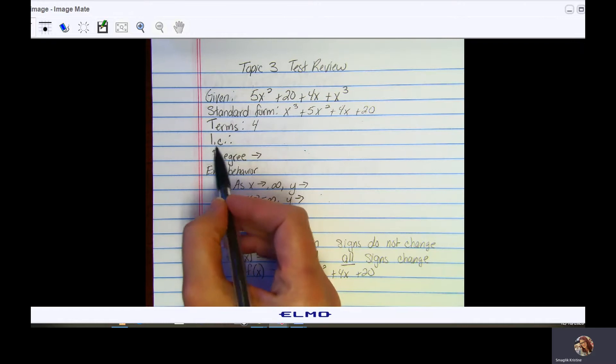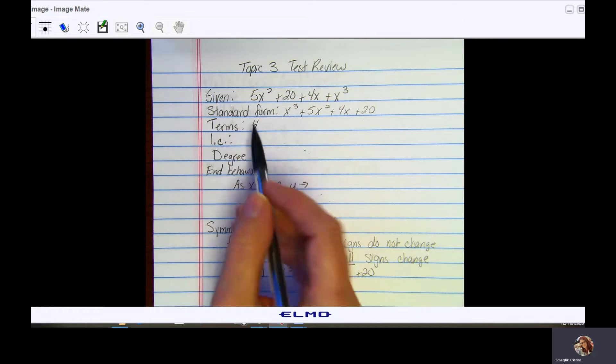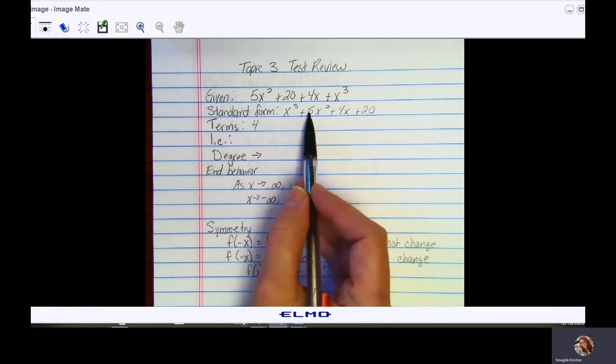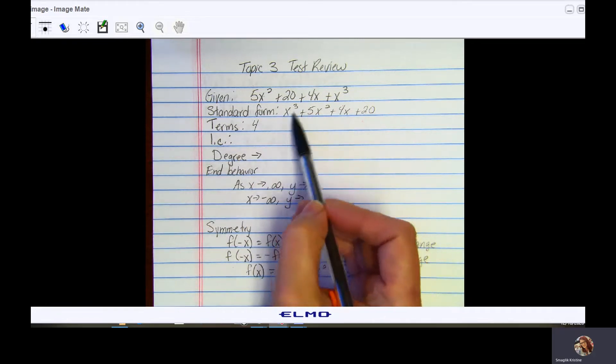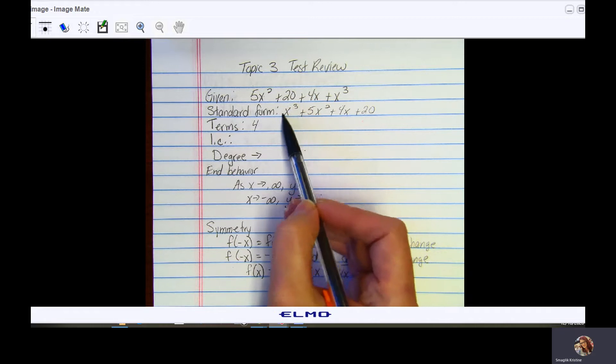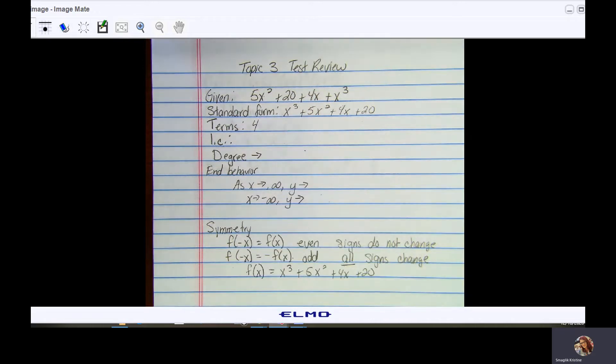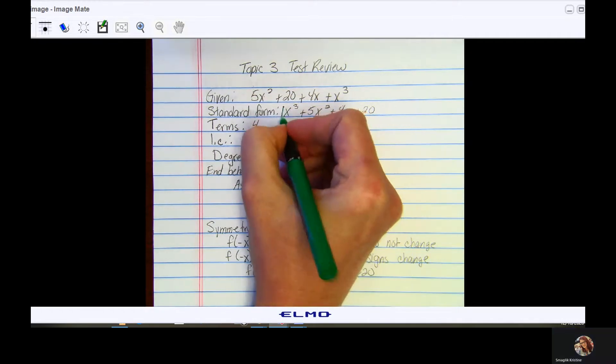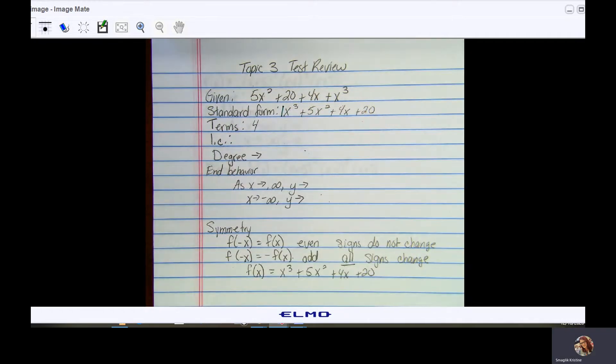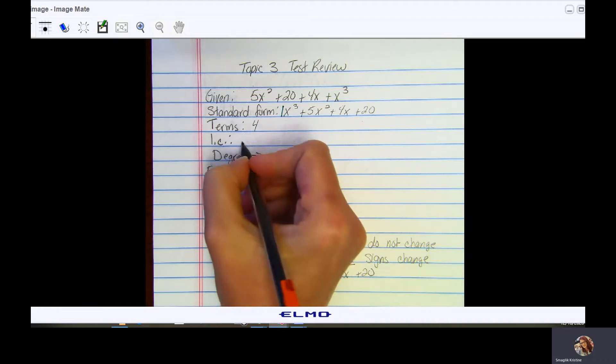Your leading coefficient is the number in front of the variable of the highest degree. If you go back to your standard form, here's your highest degree. The number you don't see but what's there is a 1, so your leading coefficient is 1.